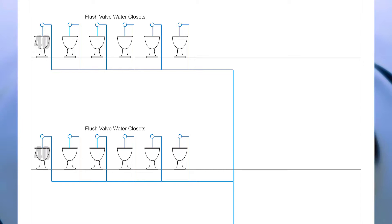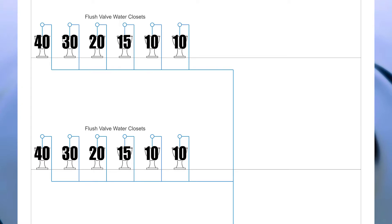Starting on the left-hand side we have 40 fixture units, 30, 20, 15, 10, and 10. So that means the fixture unit load on both stories — on this pipe here and on this pipe here — will be 125 fixture units each.